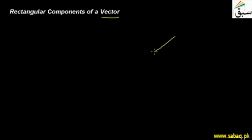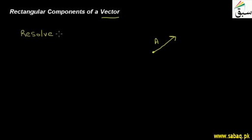Vectors, as you know, are physical quantities which represent magnitude and direction. If we have a vector and we want to resolve it into its components, we can resolve it in different ways. The purpose of resolving it is that we want to find out the solution, and the most convenient method is to resolve it into rectangular components.